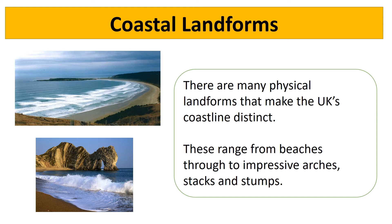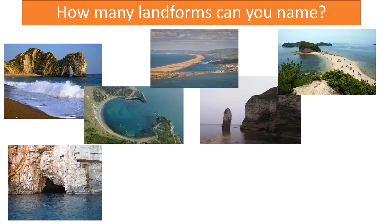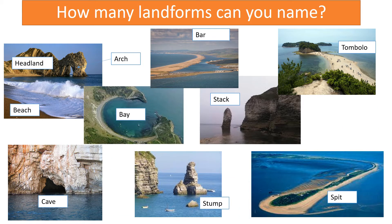There are many different coastal landforms that make the UK's coastline distinct, ranging from beaches through to arches, stacks and stumps. Take a moment to look at these pictures, pause the presentation and see how many different landforms you recognise. Here are some examples of what you'd find in the UK.